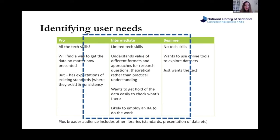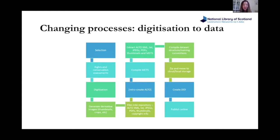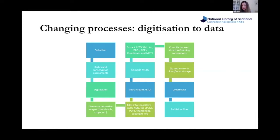We then had to think about how to make collections available as data. This is a broad workflow of how you go from a print collection to a data collection — thinking about rights, what kind of images to make available, file formats, metadata, any retro-creation of file formats, where to store them, creating digital object identifiers, and then publishing them online. Our digitisation program had been set up to think about online image galleries, not datasets, so our digitisation team made adjustments and we came up with this workflow to create datasets for the Data Foundry.